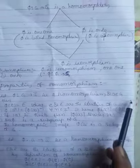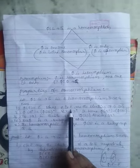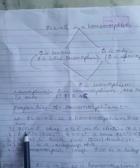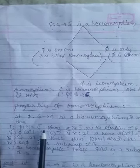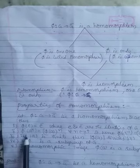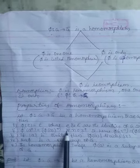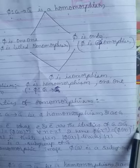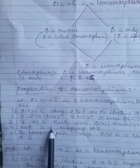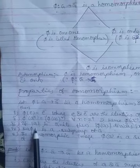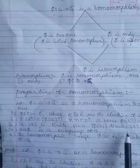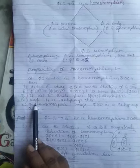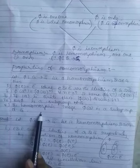These are the properties of homomorphism. Let phi from G to G' be a homomorphism and a belongs to G. Then: (1) phi(e) = e', where e and e' are the identities of G and G' — the identity element of G maps to the identity of G'. (2) phi(a^n) = phi(a)^n for all n belonging to Z+. Hence phi(a^-1) = phi(a)^-1. (3) If the order of a is finite, then the order of phi(a) divides the order of a. Also, the kernel is a subgroup of G and the homomorphic image phi(G) is a subgroup of G'.